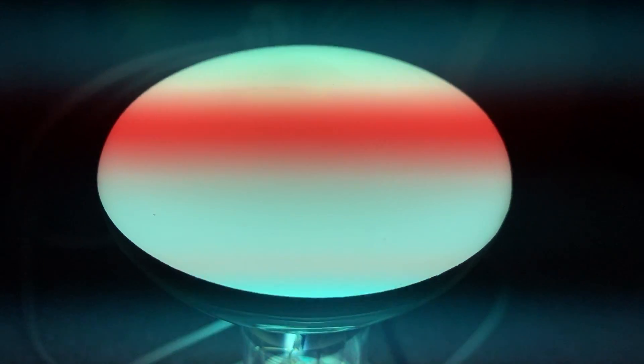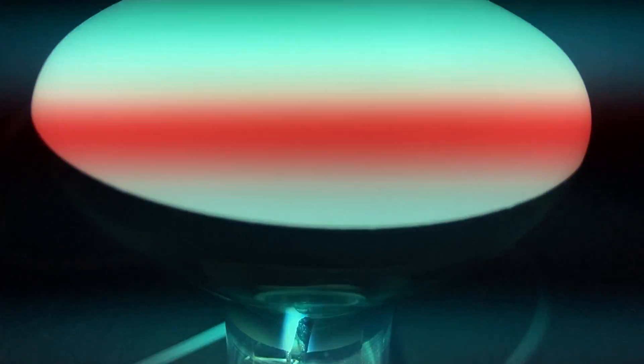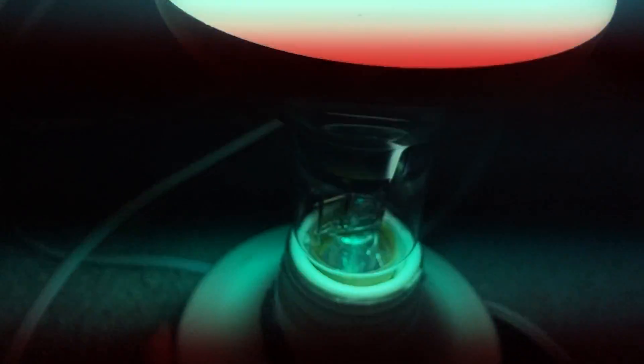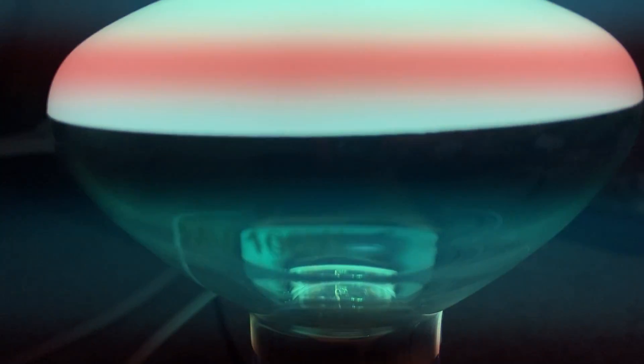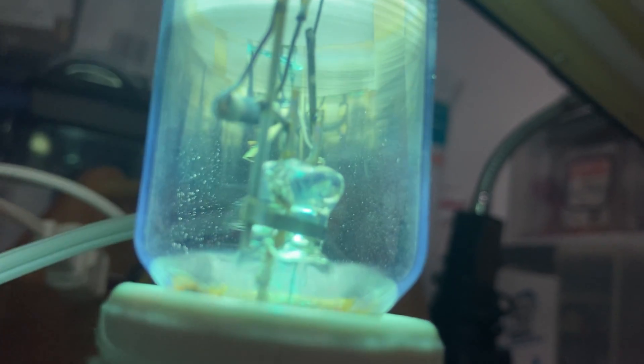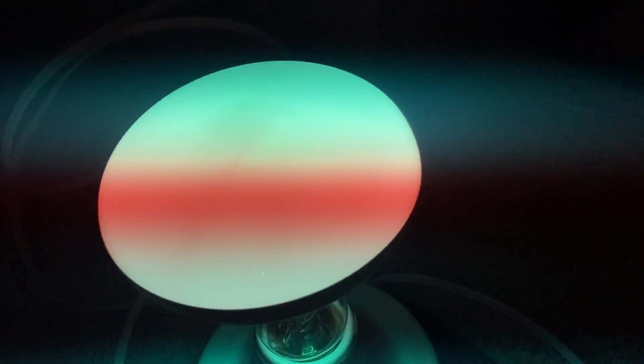You can see the color bands there. If anyone can identify the phosphor line-out, or hell, even the brand of this thing. Oh, this says... see, where does it say it on here? Right there. I should pick that up. But it says NV 100 watts there. That's it. If you know anything about this lamp, I would very much appreciate it.